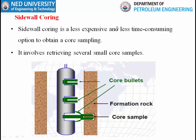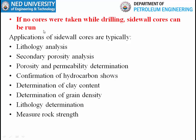With a sidewall coring gun we can collect 50 small cores from a given wellbore. Sidewall coring is less expensive and less time consuming than conventional coring. It is done when no cores were taken while drilling. The applications are the same as conventional coring: identify lithology, measure porosity and permeability, identify fractures and vugs, calculate secondary porosity, confirm hydrocarbon presence, measure clay content, grain density, and rock strength.